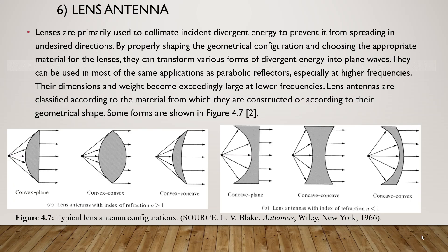Lens antennas are primarily used to collimate incident divergent energy to prevent it from spreading in undesired directions. By properly shaping the geometrical configuration and choosing the appropriate material for the lenses, they can transform various forms of divergent energy into plane waves. They can be used in most of the same applications as parabolic reflectors, especially at higher frequencies. Their dimensions and weight become exceedingly large at low frequencies.